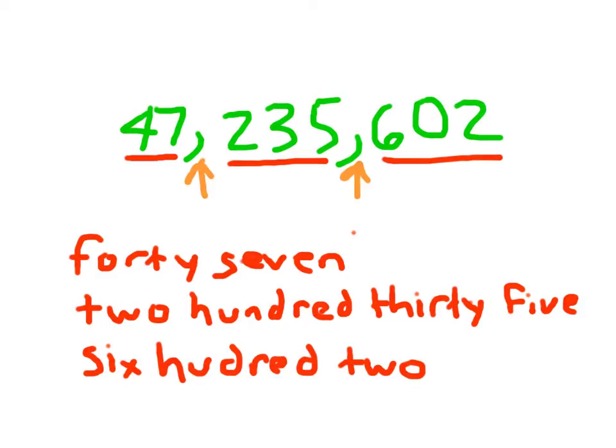Now remember that first comma is going to be million. And after we say 235, we're going to go ahead and say thousands. So I'll go ahead and put that in there. You'll notice I put a hyphen in there just to be more precise. Reading the whole thing again, it's 47 million, two hundred thirty-five thousand, six hundred two. And looking at that number again: 47 million, two hundred thirty-five thousand, six hundred two.